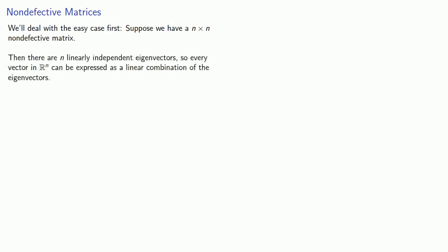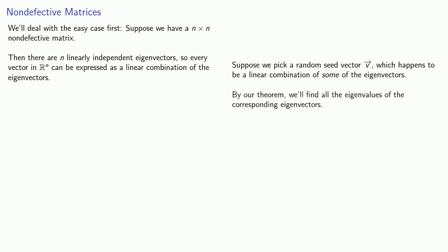So we'll deal with the easy case first. Suppose we have an n by n non-defective matrix. Then there are n linearly independent eigenvectors. So every vector in R^n can be expressed as a linear combination of the eigenvectors. So suppose we pick a random seed vector v, which happens to be a linear combination of some of the eigenvectors. By our theorem, we'll find all the eigenvalues of the corresponding eigenvectors. And so every seed vector gives us a set of eigenvectors.